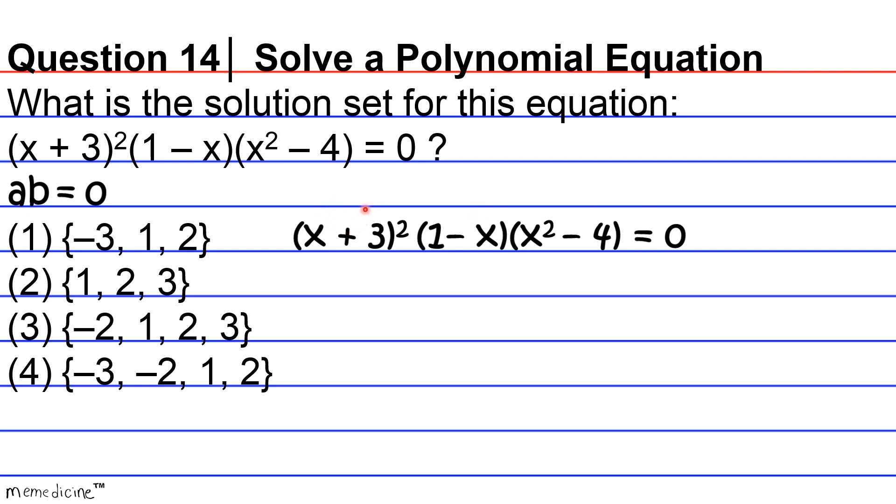And we're going to finish factoring again by using the zero product property. Well, if we look at the first factor, we're going to notice that it's a square of this base, x plus three, so we can just write that out twice. Then one minus x, we're not going to do anything with that, but this is pretty neat, because we have x squared minus four.